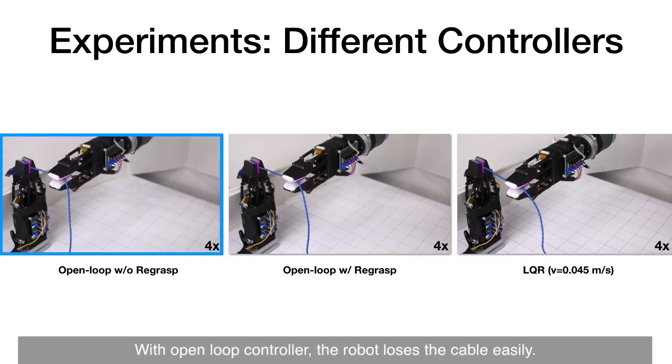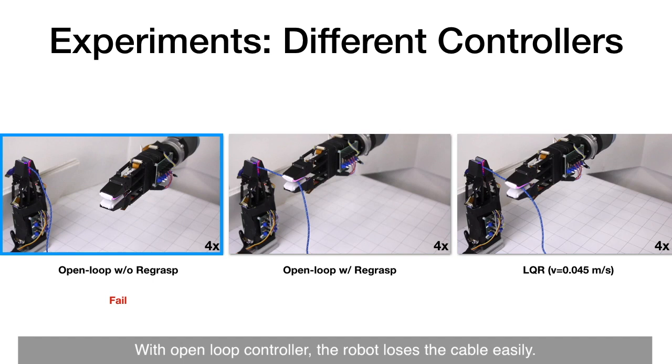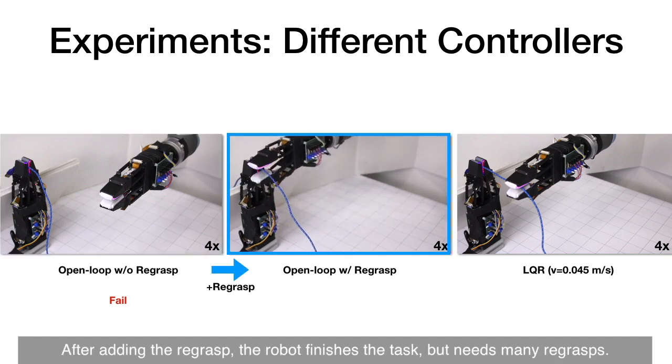Here we compare different controllers. With open-loop controller, the robot loses cable easily. After adding the re-grasp, the robot finishes the task but needs many re-grasps.